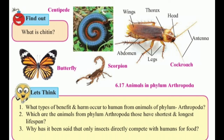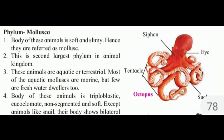These animals are unisexual. Examples include crab, spider, scorpion, millipede, centipede, cockroach, butterfly, honey bee, etc.